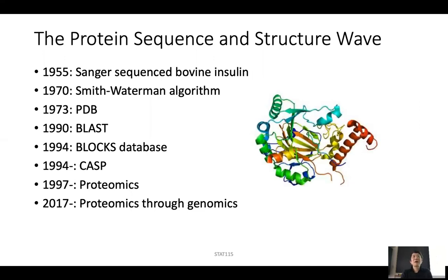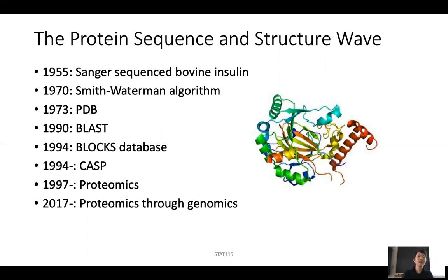You probably wonder what bioinformatics and computational biology is, so I want to quickly go over some history. This is related to how biology has evolved over the last 70 years. The very first part of bioinformatics is related to protein sequence and protein structure. In 1955, Sanger invented the methods to sequence protein and won a Nobel Prize for it. Since then, many groups started sequencing proteins, and every time you sequence a protein, you want to see whether it's similar to other sequences already known. So there needs to be computational methods to compare sequence similarity.